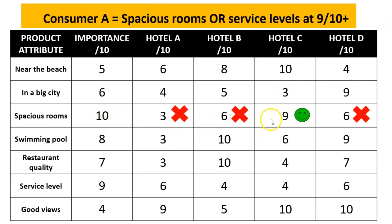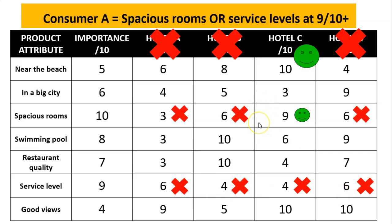Going through spacious rooms, the only hotel that has a score of 9 or above is hotel C — the rest are below 9, so we rule them out. Then we look at service level; unfortunately none of the hotels score 9 out of 10. Which means, on the basis of those two attributes alone, the only suitable hotel option for this consumer is hotel C. Hotels A, B, and certainly D do not meet their expectations. Hotel C has great spacious rooms; service level is not so good, but we go: great room, looking forward to the holiday.